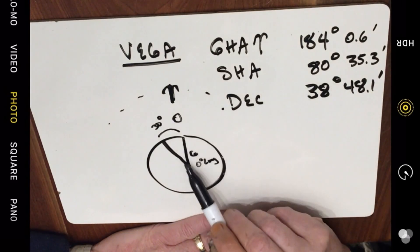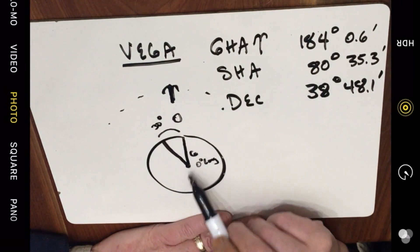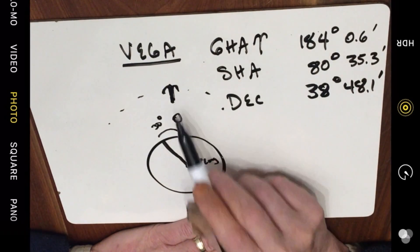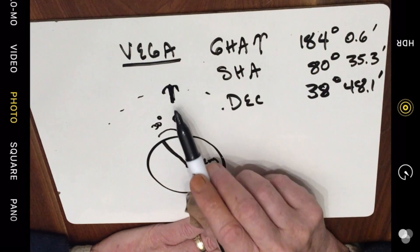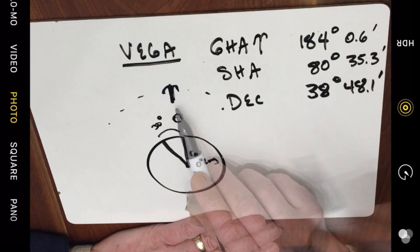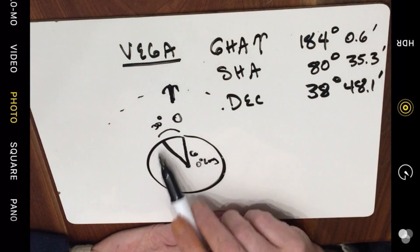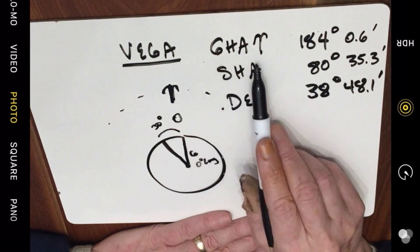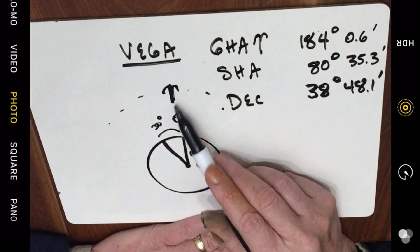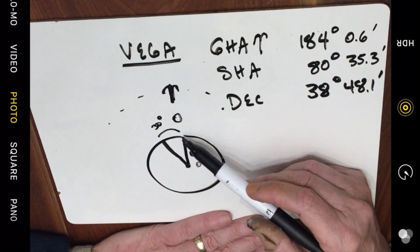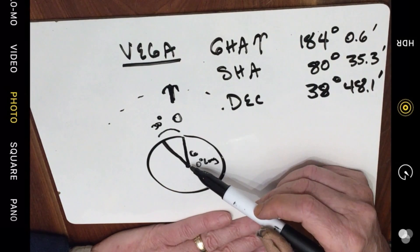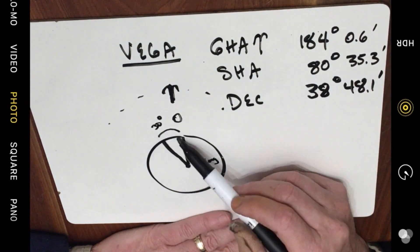What that does is that orients the earth to the celestial sphere. So it gives you the relationship between the prime meridian on earth, the meridian of Greenwich, and Aries, which is the prime meridian of the celestial sphere. Now what this means is that at this time, if the Greenwich hour angle to Aries is 30 degrees, that means that Aries will be above the 30 degree west line of longitude. See how that works out?